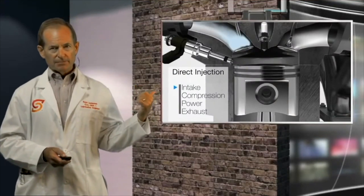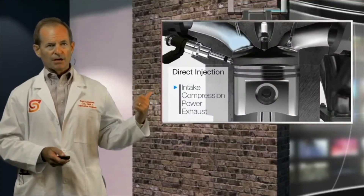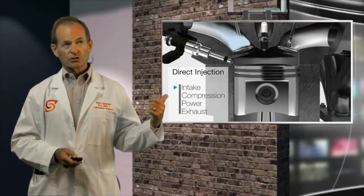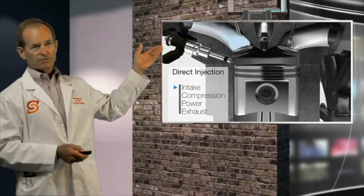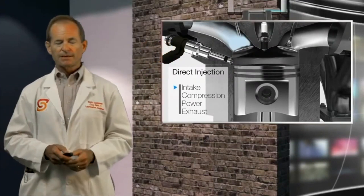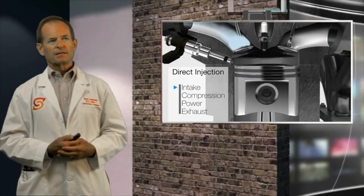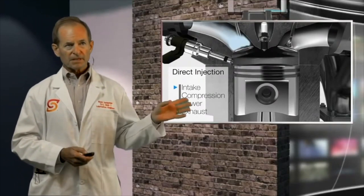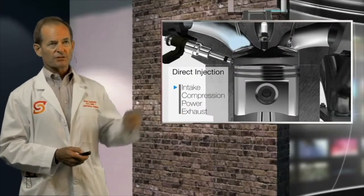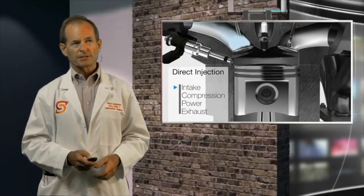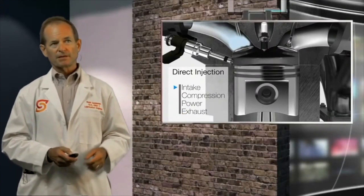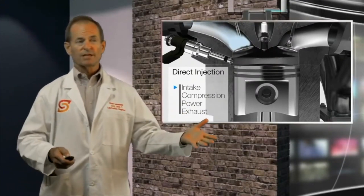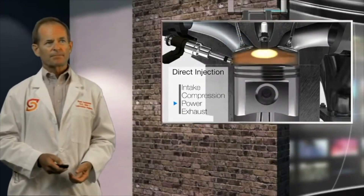Here's an animated picture of what direct injection looks like. We're looking inside a cylinder — you've got the intake manifold coming in, the injector shown just below it, and the spark plug in the middle. This will take you through all four of the four-stroke cycles.